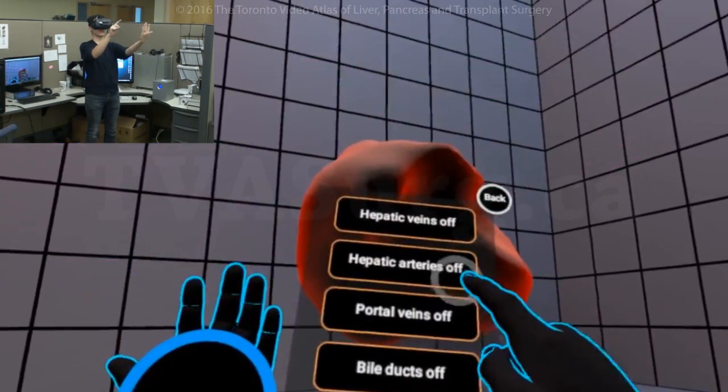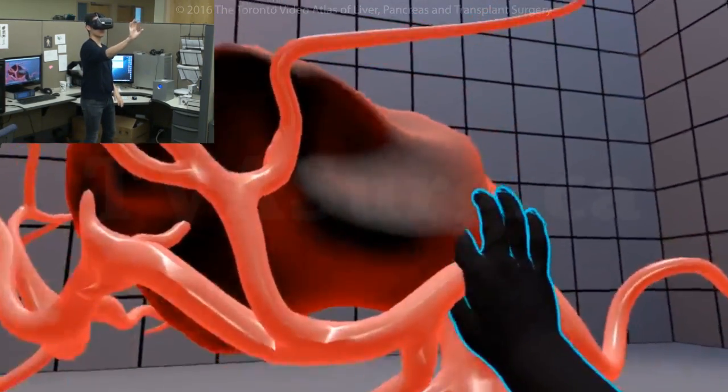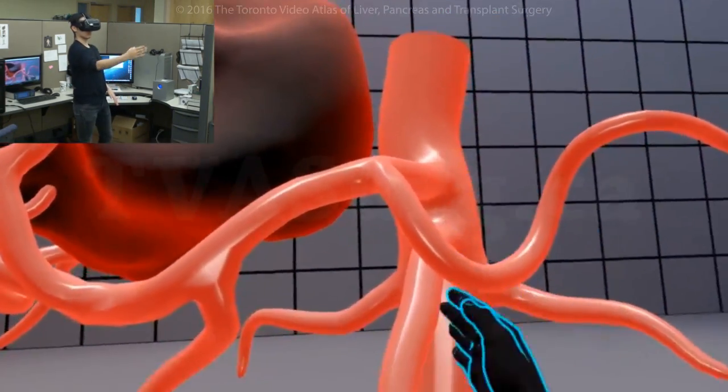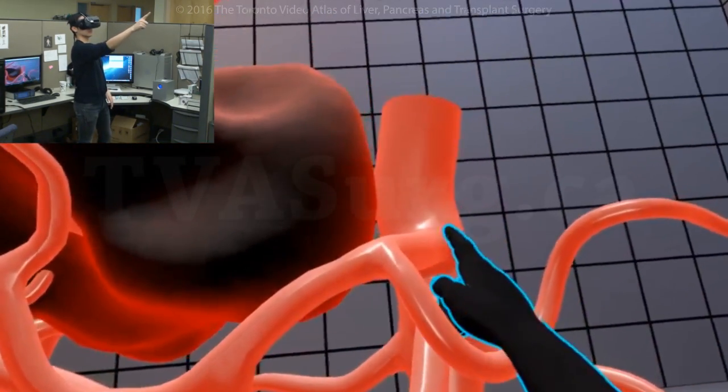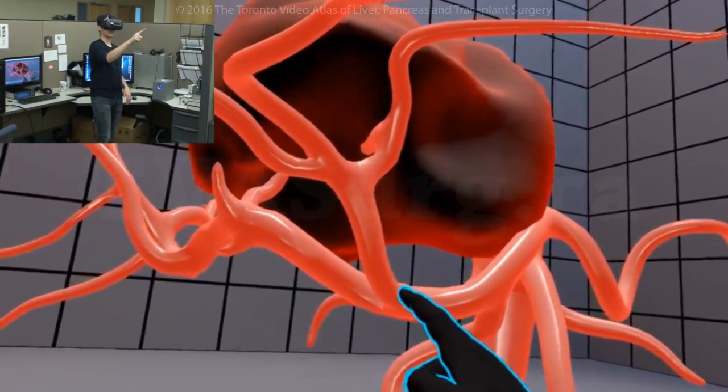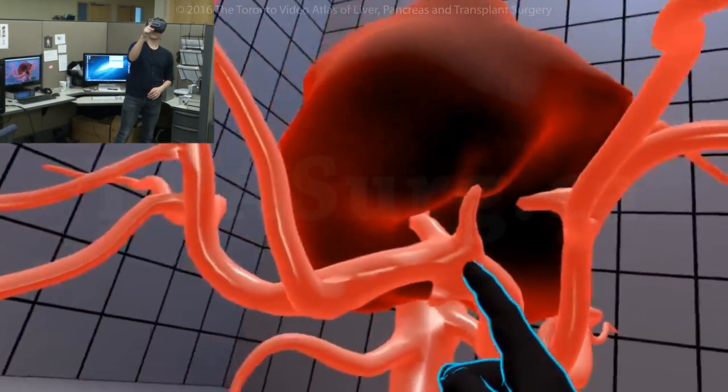And take a look at the hepatic arteries, let's just rotate it a little bit to this side. And we can see here is the aorta that gives off the celiac artery, coming the hepatic artery, coming the left hepatic artery, and the right hepatic artery here.